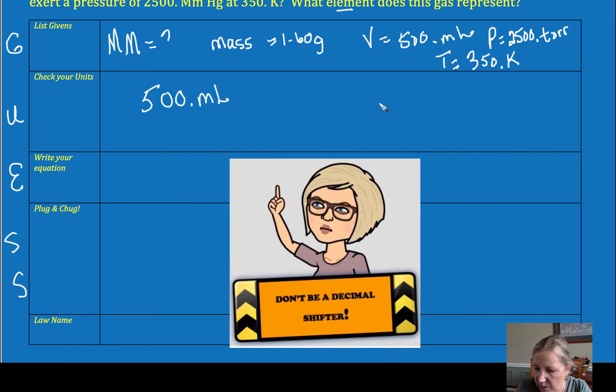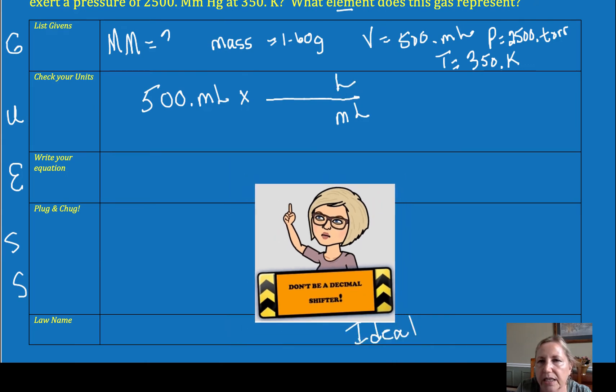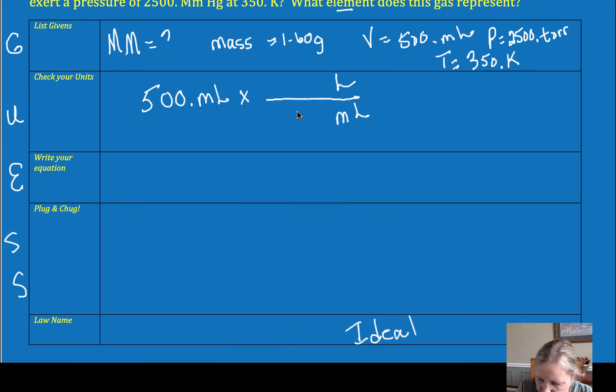Many of you love to shift decimals. And after grading the AP test for years, don't be a decimal shifter. I can't tell you how many students shifted the wrong way. I want to get rid of milliliters and I want liters. So I know that one milliliter is 1 times 10 to the minus third liters, and that gets me 0.500 liters. Since this has mass and molar mass in it, I like to use this formula.